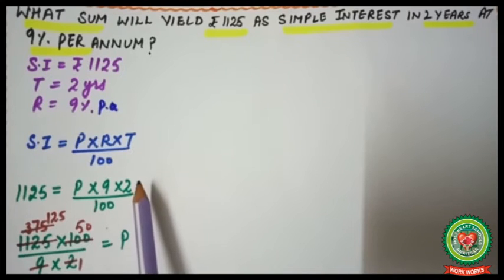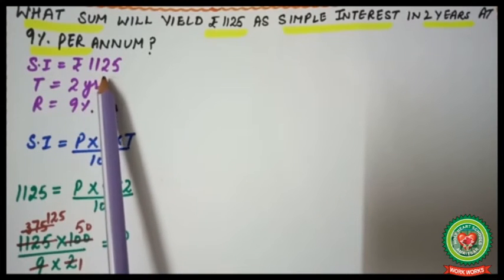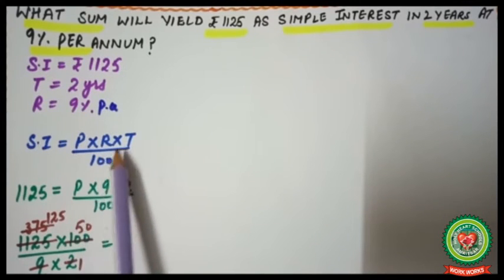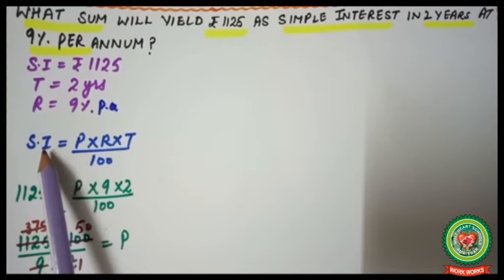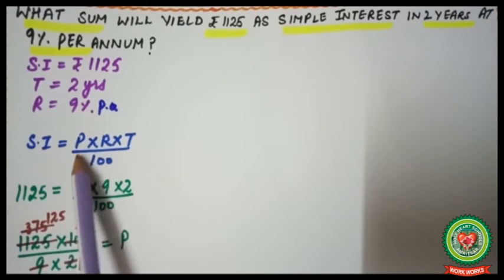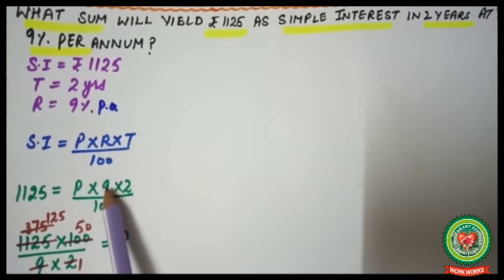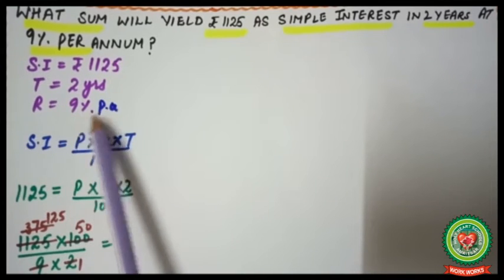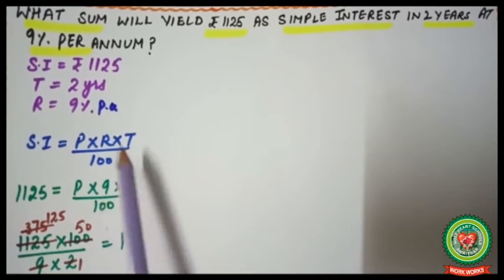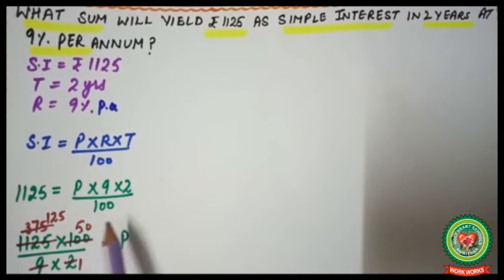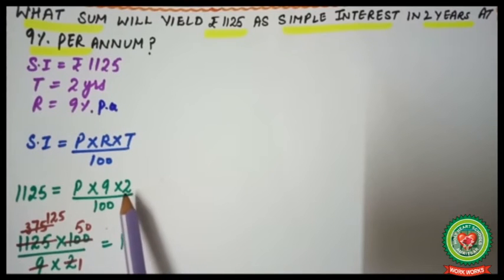We have to find principal P. Since SI is given, we apply the formula SI = P × R × T / 100. Putting the values: 1125 = P × 9 × 2 / 100. We need to find P, so we will not do cutting here — instead we shift terms.